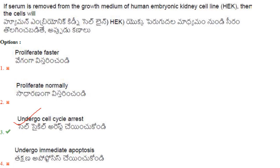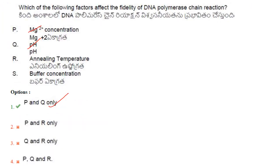If serum is removed from the growth medium of a human embryonic kidney cell line, the cells will undergo cell cycle arrest — answer is option 3. Which factors affect the fidelity of DNA polymerase chain reaction? Mg²⁺ concentration and pH will both affect fidelity, while annealing temperature and buffer concentration do not affect it significantly. So P and Q only — answer is option 1.